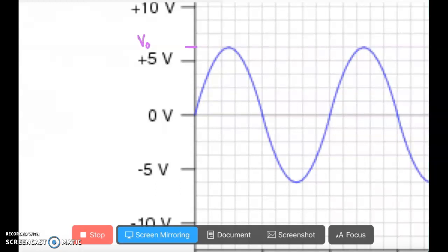V sub zero, standing for our peak voltage, our maximum voltage. And I'm noticing here that each box doesn't necessarily correspond to just one volt. So between zero and five, I have four boxes, but I have five numbers. So that must mean that each box is 1.25.